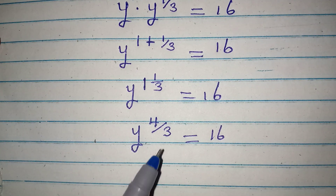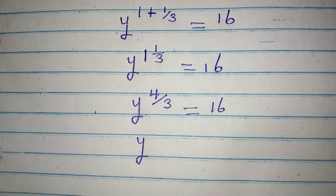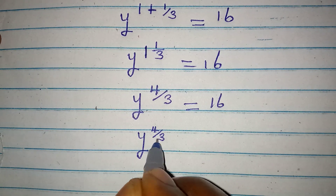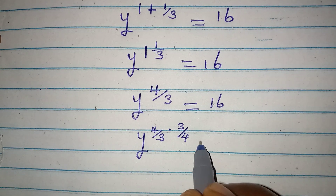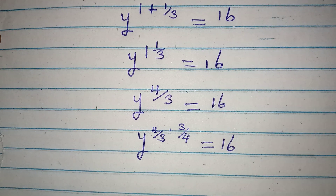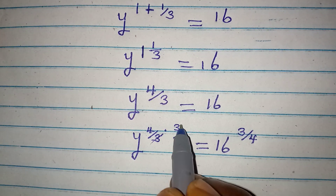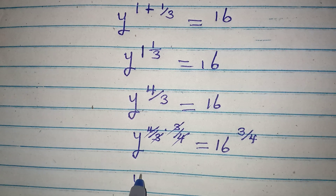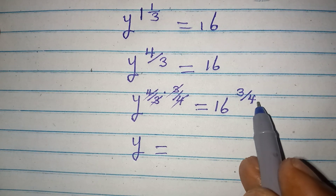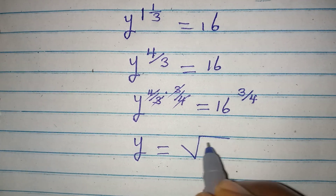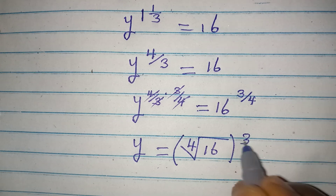Now the next thing is: how do we do away with this power? We can do that by multiplying the power by its reciprocal. The power is 4 over 3, and its reciprocal is 3 over 4. That is how we can eliminate this from there. The reciprocal will reflect on the right side. So we have y equal to 16 to the power of 3 over 4.